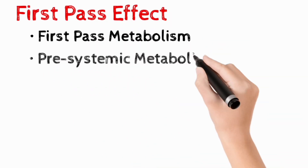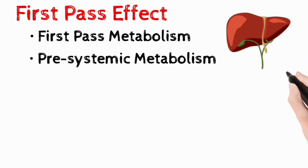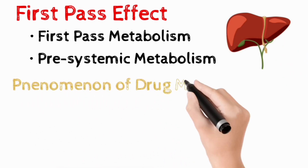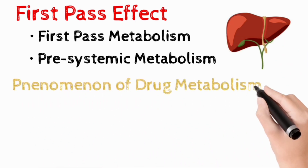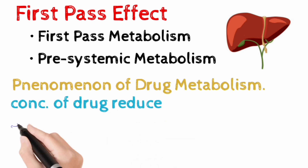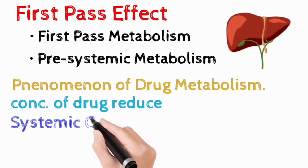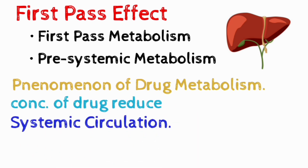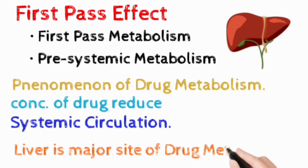First pass metabolism is a phenomenon of drug metabolism where the concentration of the drug is greatly reduced before reaching the systemic circulation. The first pass effect is mainly associated with the liver, as the liver is a major site of drug metabolism.